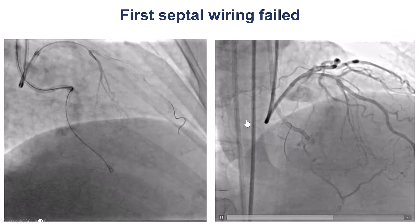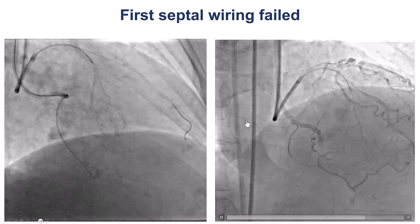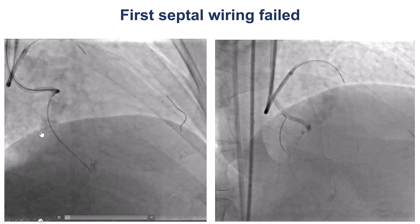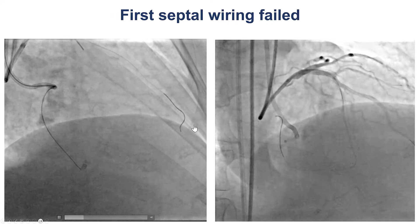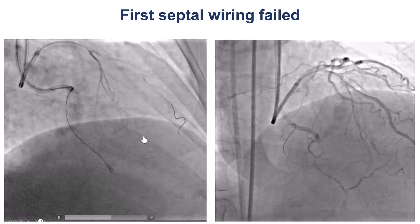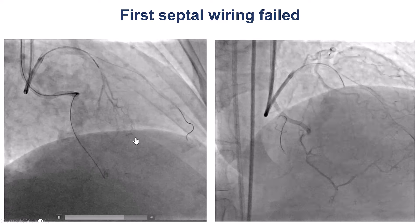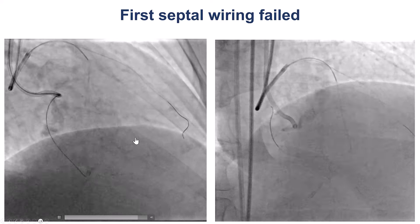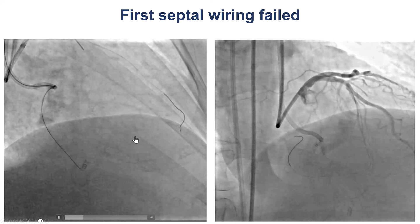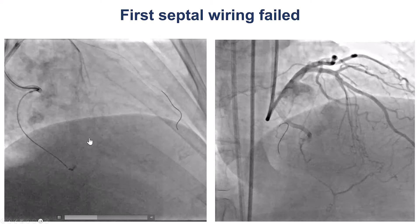So, what are the options here? One option would be to go retrograde. The other option would be to stent into the PDA and the posterolateral. However, given the bifurcation, we believed that going retrograde would provide a better result.